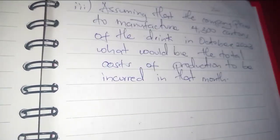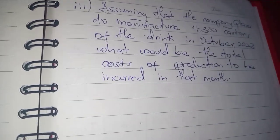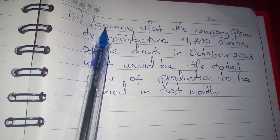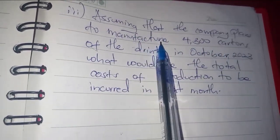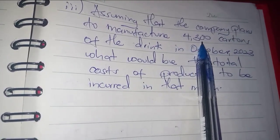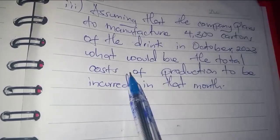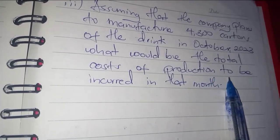We are going to calculate for total costs in this video. The question says assuming that the company plans to manufacture 4,300 cartons of the drink in October 2023, what would be the total cost of production to be incurred in that month?